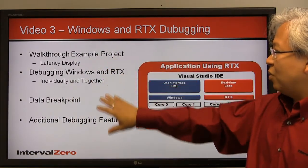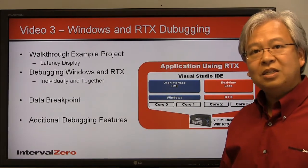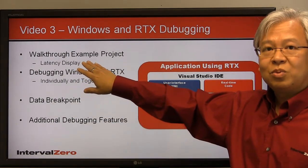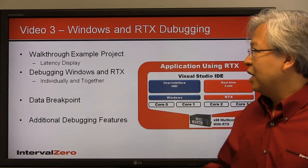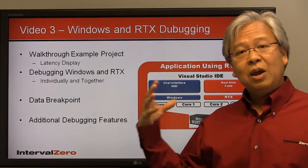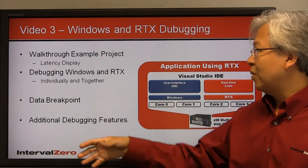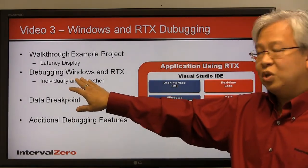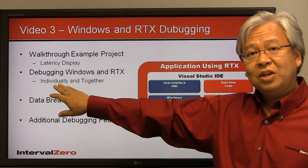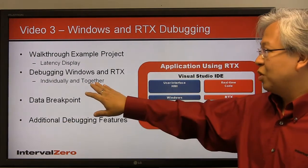To go over what you'll see in this video: at the beginning, we're just going to walk through a simple project using one of our RTX sample projects called Latency Display. This project has both a Windows UI component and a real-time component, and we're going to use Visual Studio to attach and debug each one individually — the Windows side and the RTX real-time side — and also both together.